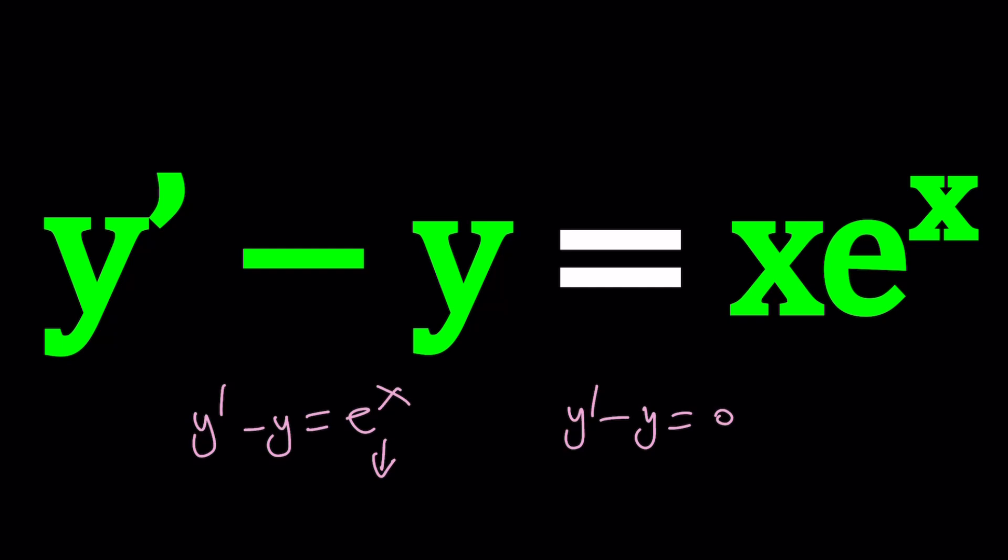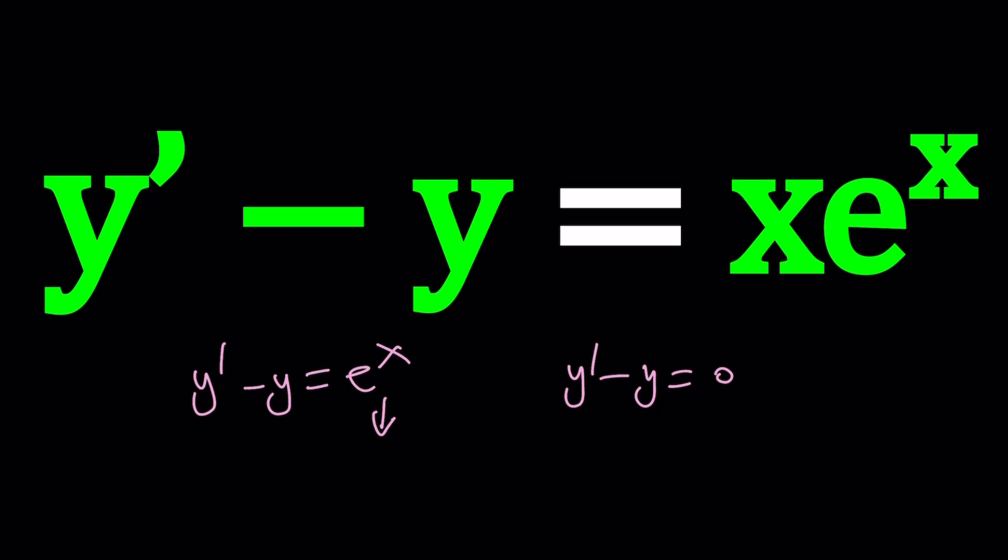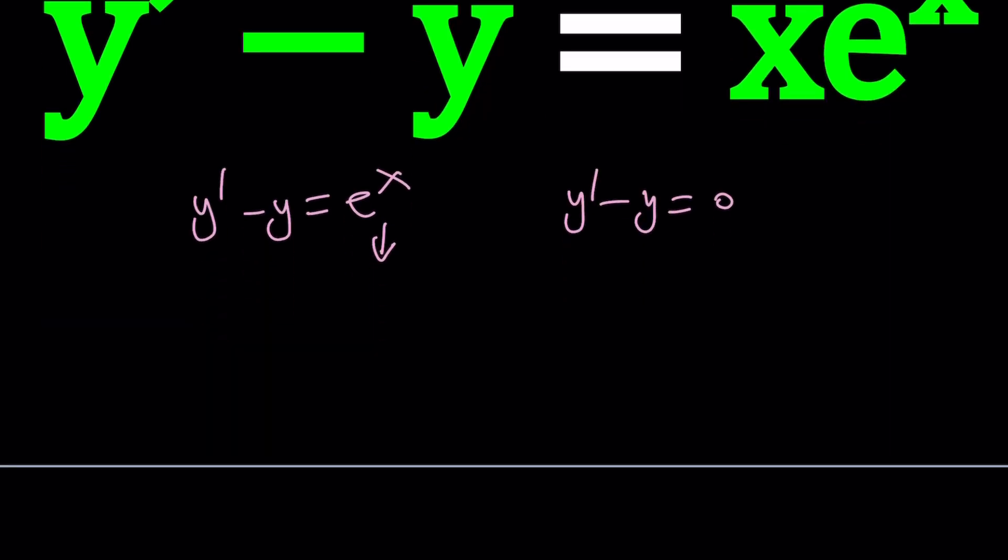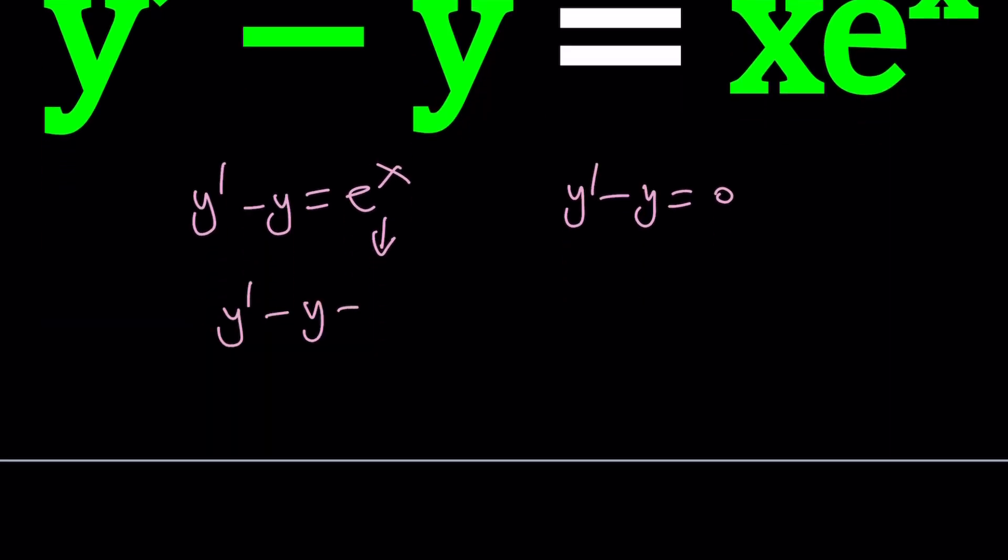We could try a couple different things. If we had a polynomial on the right-hand side, such as y' minus y equals x squared plus x, then we could try the homogeneous solution first, but then to find a particular solution, we could guess something like ax squared plus bx plus c, because by differentiating y once and then subtracting the y, we could easily get something quadratic from here.